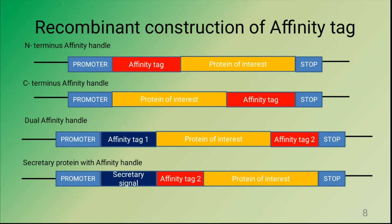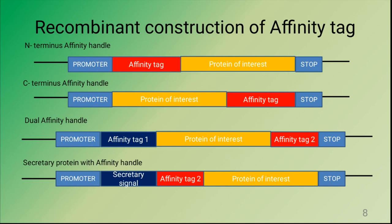Now we will see how to construct the recombinant DNA to express the affinity tags. Generally, four approaches are followed. In case one, the affinity tag is attached at the N-terminus region of the protein, so immediately after the promoter the affinity tag is present, followed by the DNA coding for the protein of interest, with a stop signal at the end. In the second case, the affinity tag is present at the C-terminus region just before the stop codon. Sometimes, dual-tagged or dual affinity handle proteins are used to get extra pure recombinant protein — for example, affinity tag 1 (FLAG) and affinity tag 2 (6X His), allowing two rounds of purification for high purity.